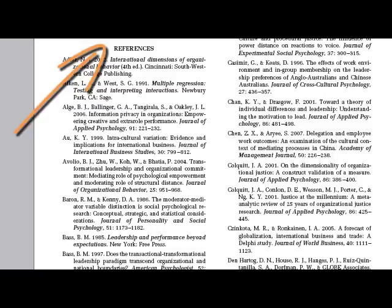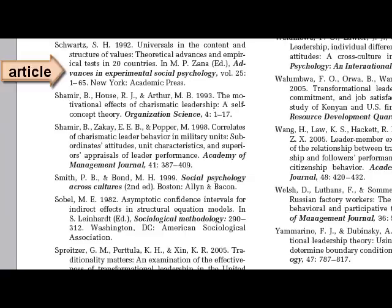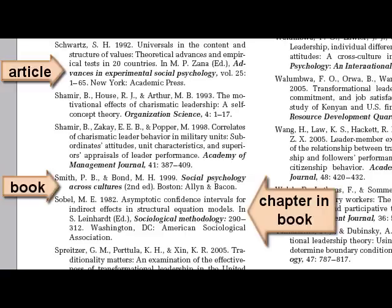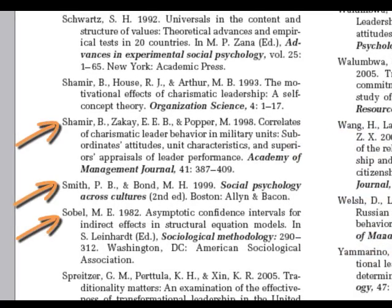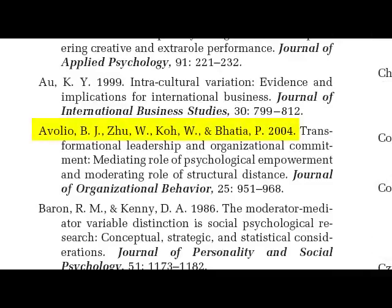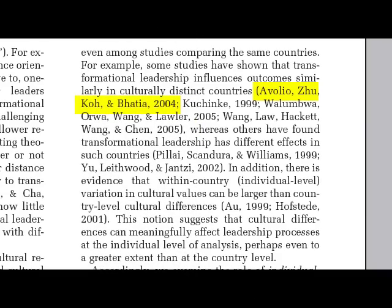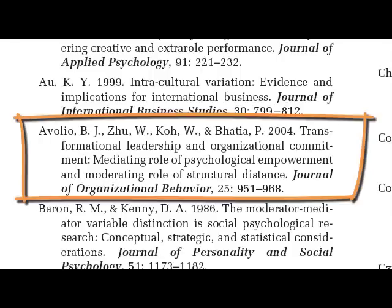At the end of a scholarly article, you'll find a list of references, or bibliography. The references list contains all the articles, books, and other information sources that the authors used in their research. The sources are listed in alphabetical order by the first author's last name. Each entry on the references list corresponds to a specific citation in the text of the article, and contains all the information you need to locate that article.